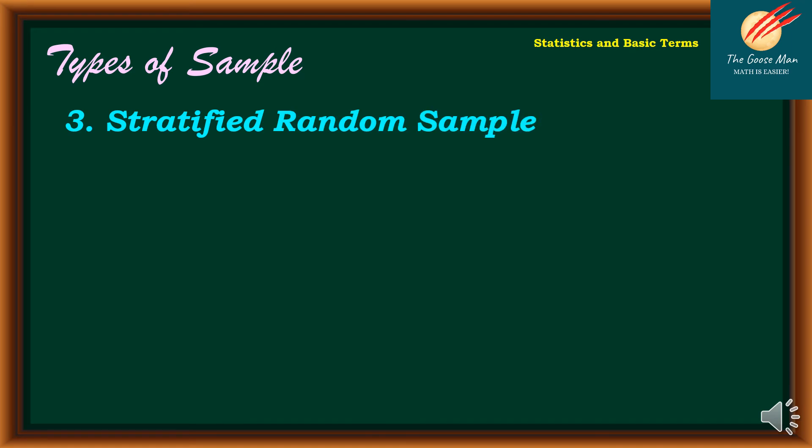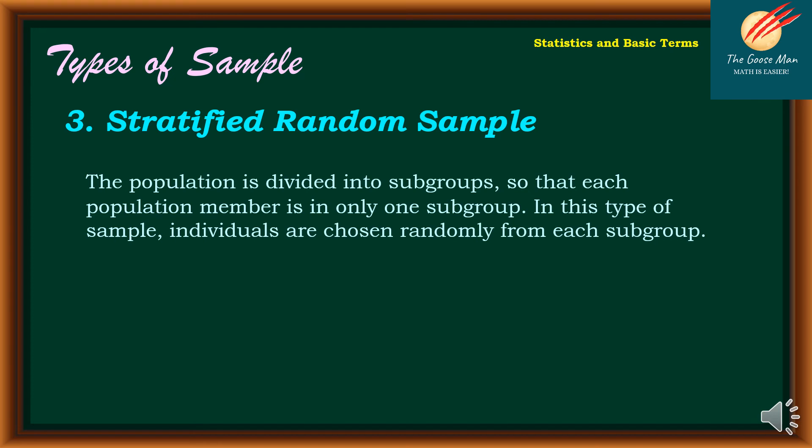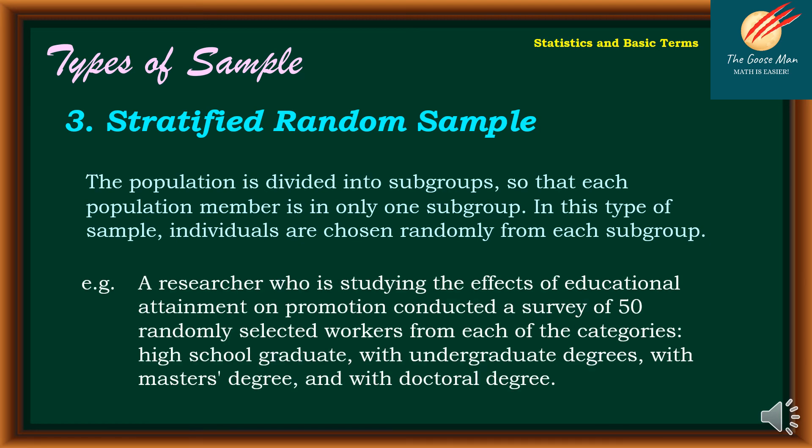The third type is stratified random sample. The population is divided into subgroups so that each population member is in only one subgroup. Individuals are chosen randomly from each subgroup. For example, a researcher studying effects of educational attainment on promotion surveyed 50 randomly selected workers from each category: high school graduate, with undergraduate degrees, with master's degree, and doctoral degree.